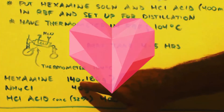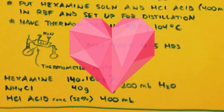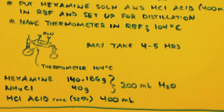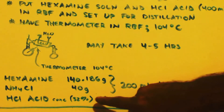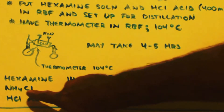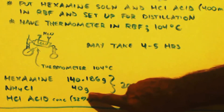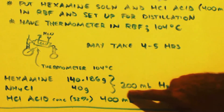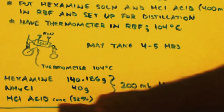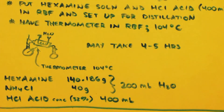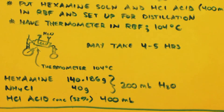One mole of hexamine is 140.18 grams; I used 186 grams in this experiment. The 40 grams of ammonium chloride excess is dissolved along with it in 200 milliliters. For the HCl acid, use whatever you get at the store — it's usually 32%. Use 400 milliliters, which gives you approximately 4 moles of HCl, actually a little bit more than 4 moles.